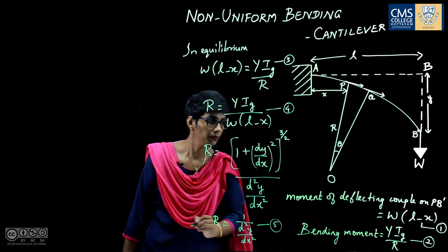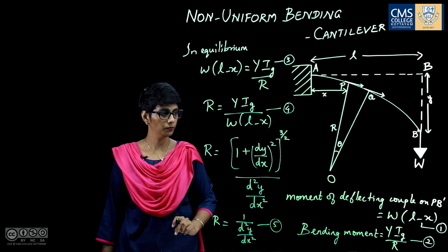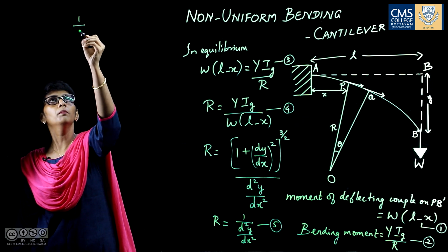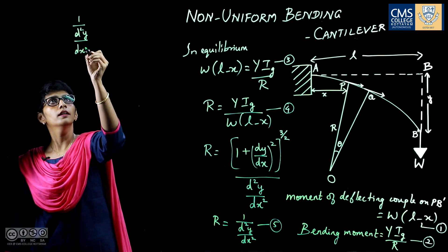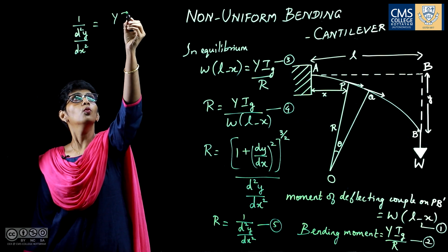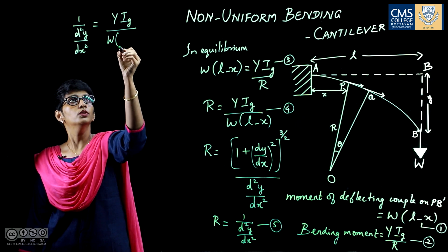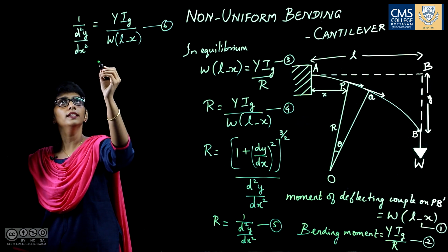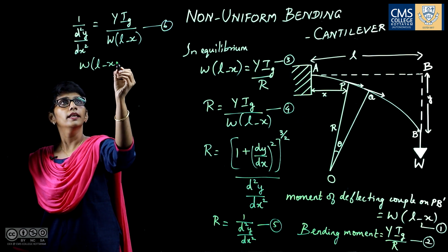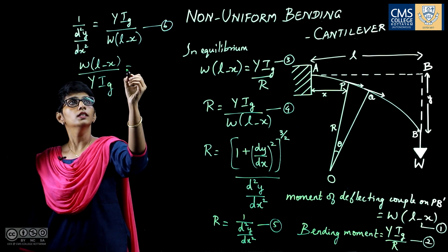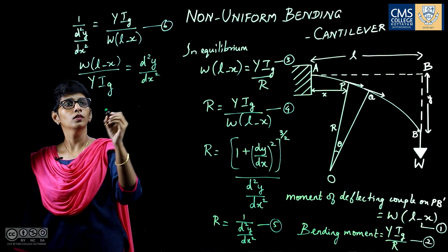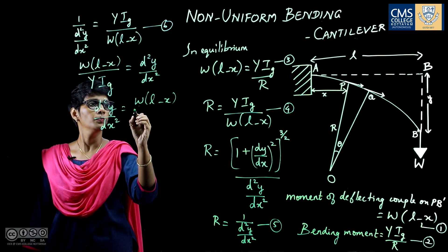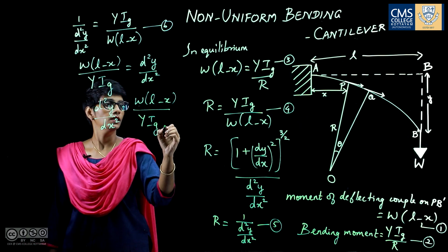Substituting equation 5 into equation 4, we get 1/(d²Y/dX²) = Y·IG / [W(L − X)]. Rearranging, we get d²Y/dX² = W(L − X) / (Y·IG). This is equation number 7.